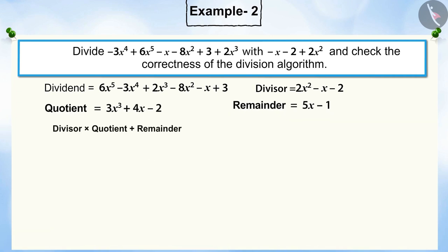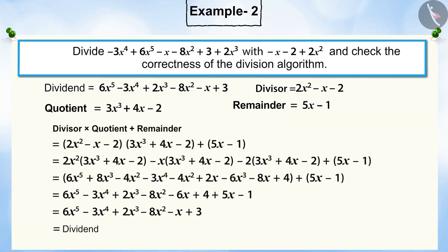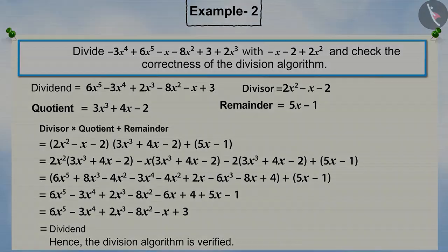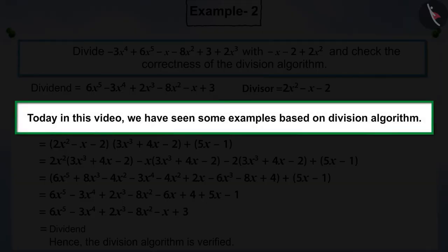Now, if on multiplying the quotient with the divisor and adding it to the remainder, it becomes equal to the dividend, then the division algorithm is verified. Today, in this video, we have seen some examples based on the division algorithm. In the following video, we will see what common mistakes can be made while solving these types of questions.